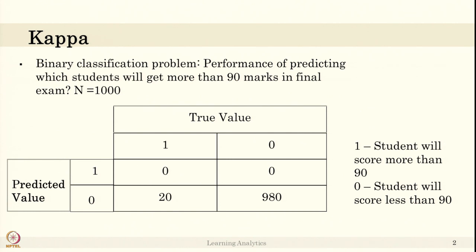There is a binary classification problem we saw: out of 1000 students, we want to predict how many students will get more than 90 marks in the final exam. Consider the table where 980 students got less than 90 marks and were predicted correctly by the classifier.